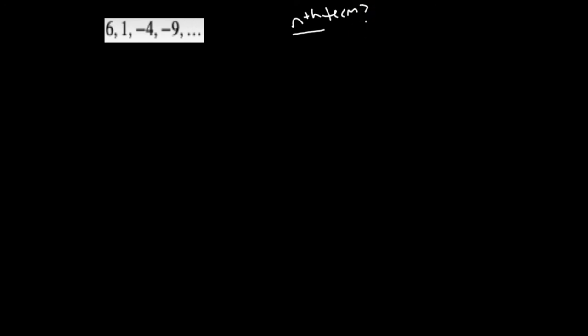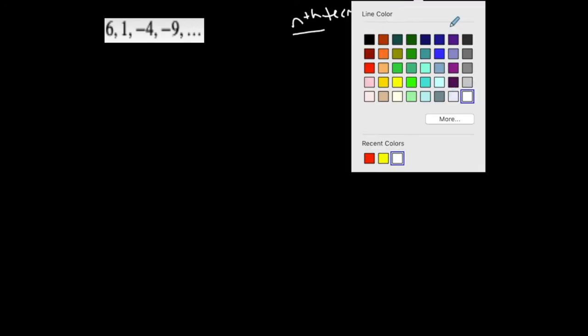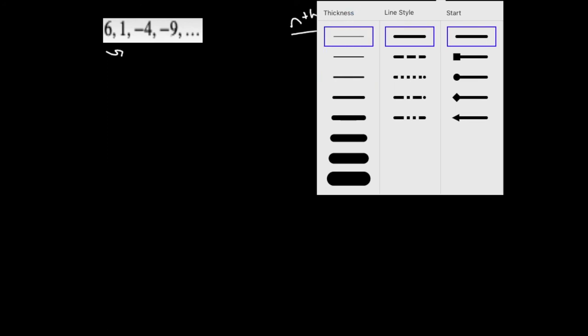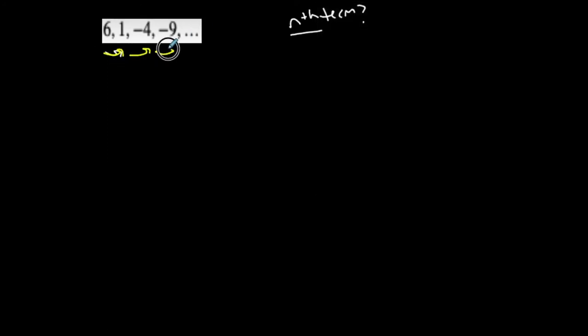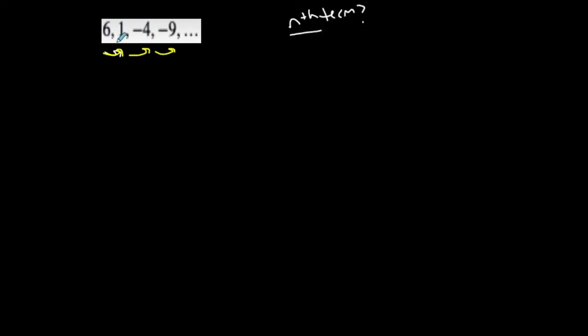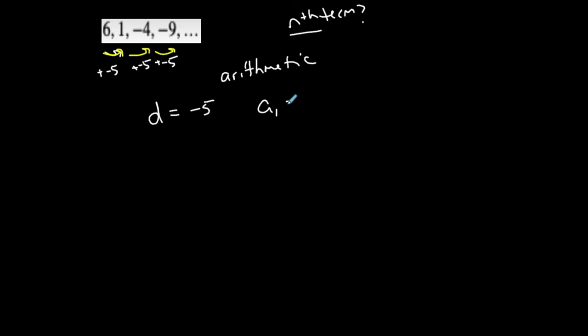Let's look at another one — find the nth term. First, let's see if it's arithmetic, because I can't just assume that it is. Not every sequence is arithmetic or geometric; some have other types of patterns. Here, I'm adding negative 5, and I'm still adding negative 5, and still adding negative 5. I'm adding the same number to each term to get to the next one, which means it is arithmetic. I have to check — I can't always assume. The common difference is negative 5 and a1 is 6.